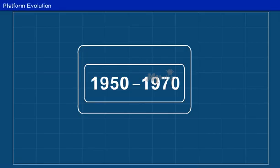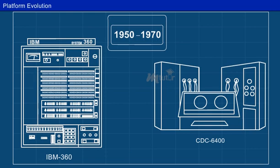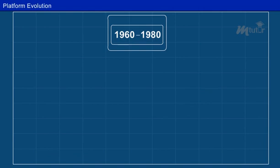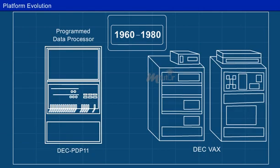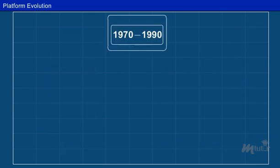The successive generations overlapped about 10 years. From 1950 to 1970, a handful of mainframes, including the IBM 360 and CDC 6400, that is, Control Data Corporation, were built to satisfy the demands of large businesses and government organizations. From 1960 to 1980, lower-cost mini-computers such as the DEC PDP-11, that is, Programmed Data Processor, and VAX series became popular among small businesses and university campuses.